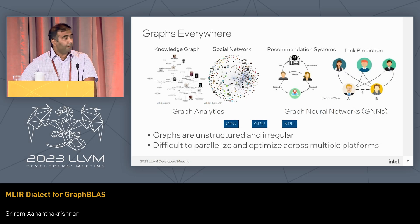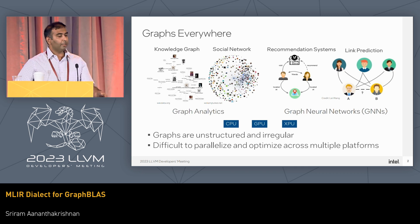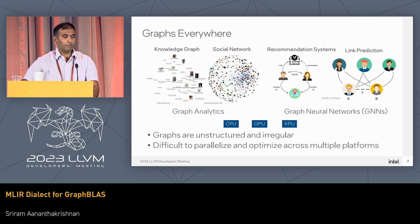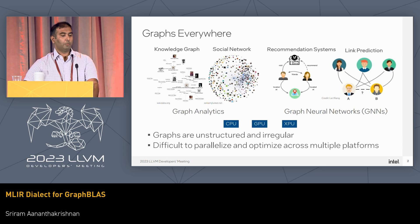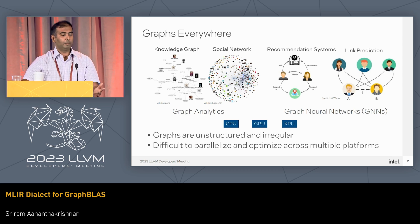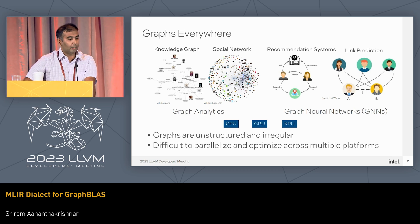We have relational data all around us, and graphs are a convenient way to describe relational data. Graph analytics is a set of algorithms to analyze relationships in graph data, and GNNs are one way to make predictions based on graph data. Both graph analytics and graph neural networks are difficult to write and parallelize.